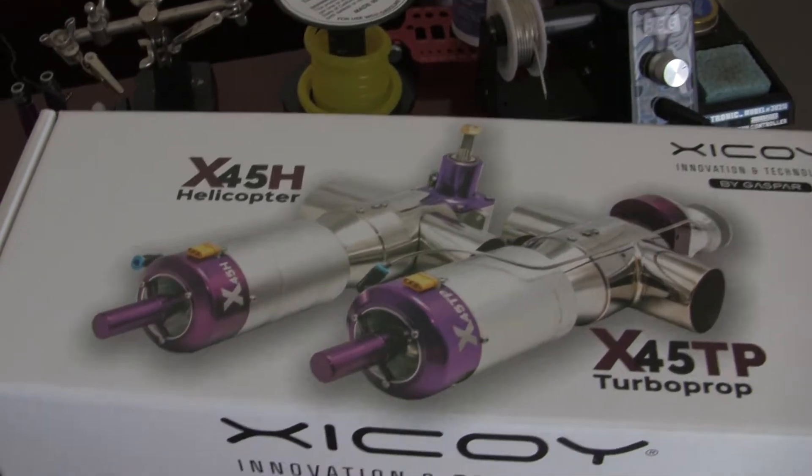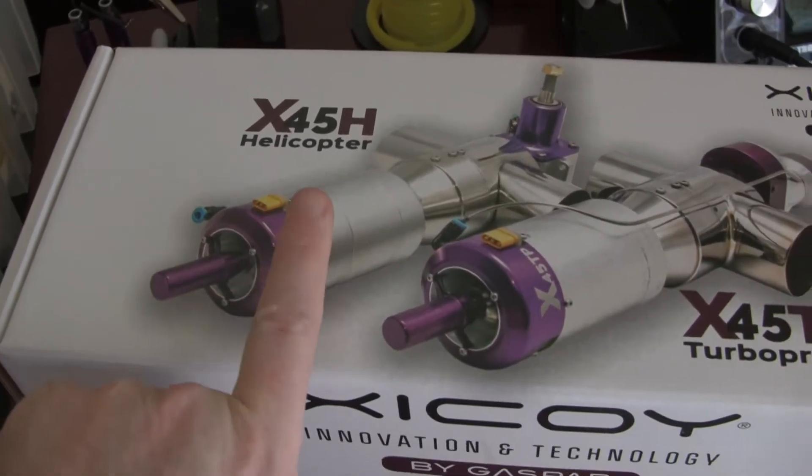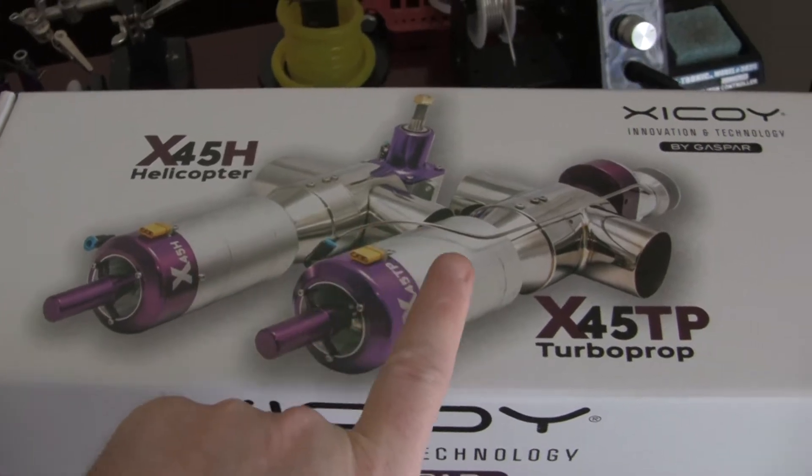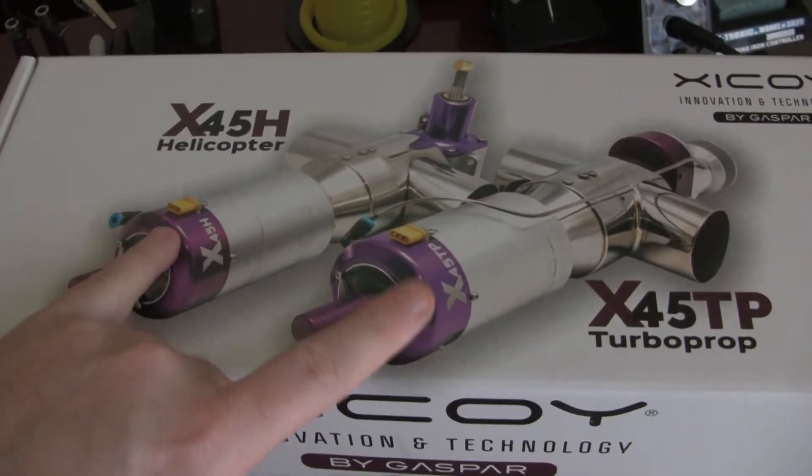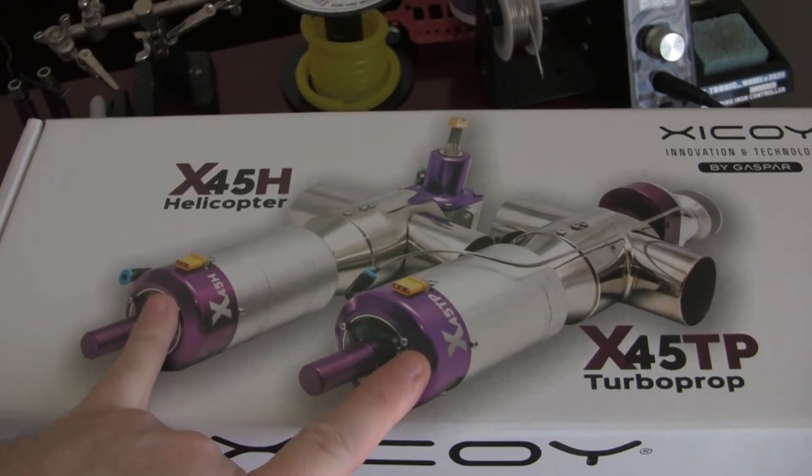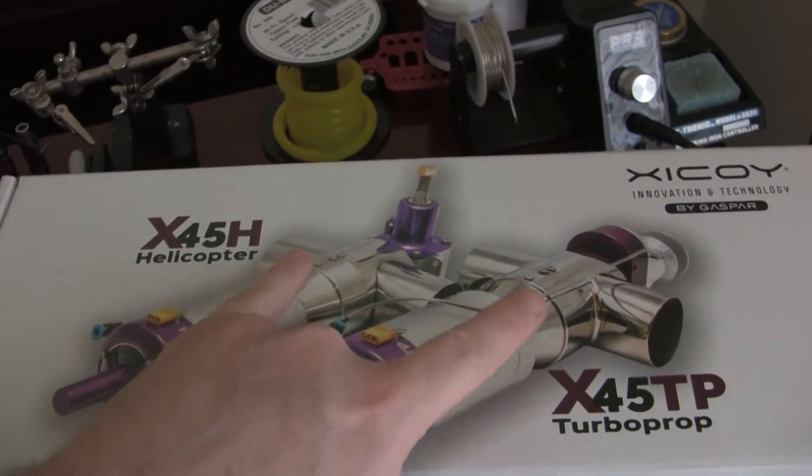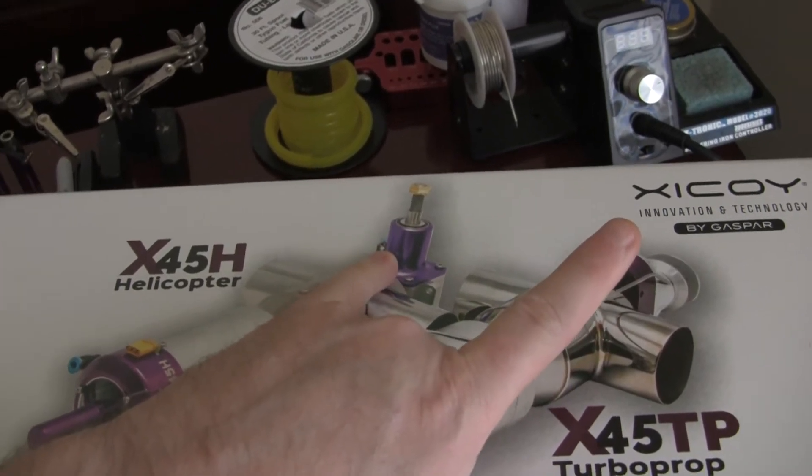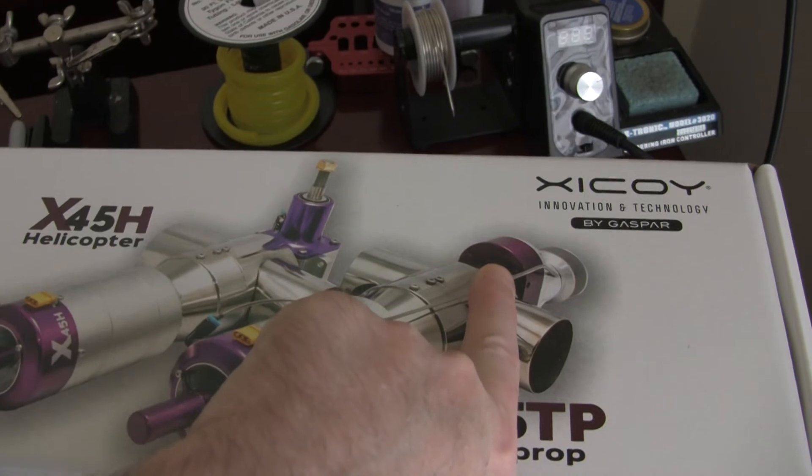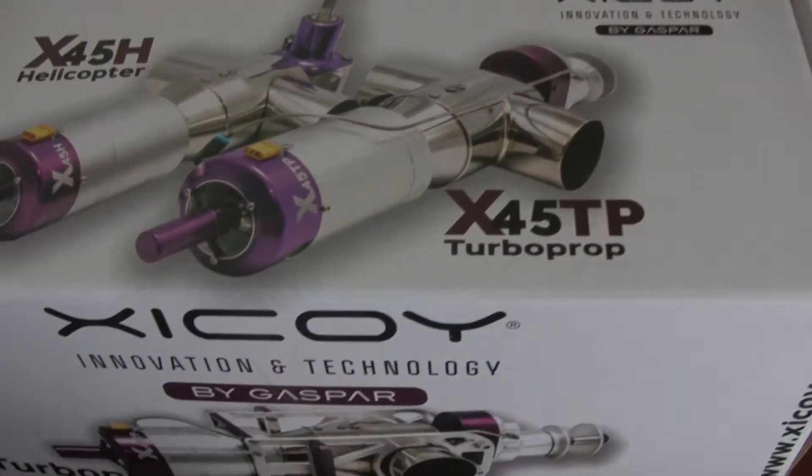So I've done the one on the X45H already, and this one is a turboprop, the X45TP. Same motors on both, they just have a different gearbox. One for the 90 degree for your helis, and then of course the gearbox for the prop hub.